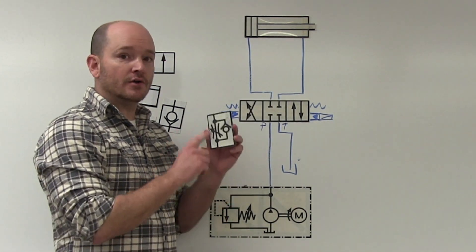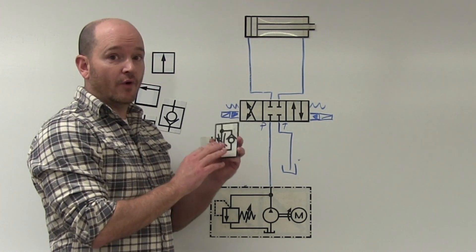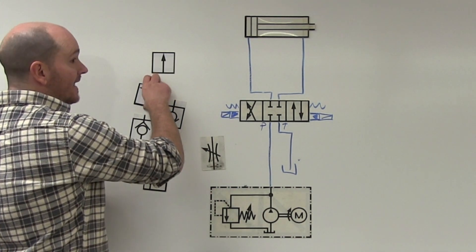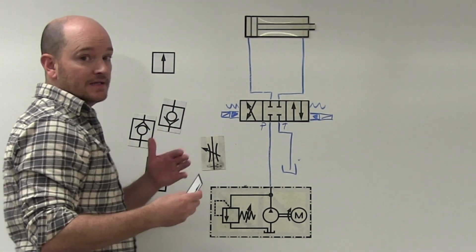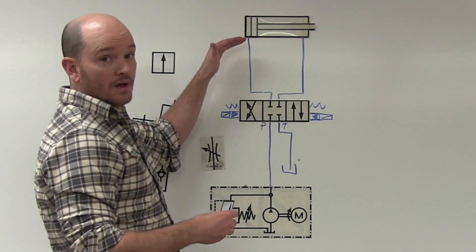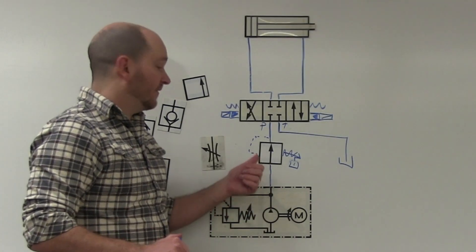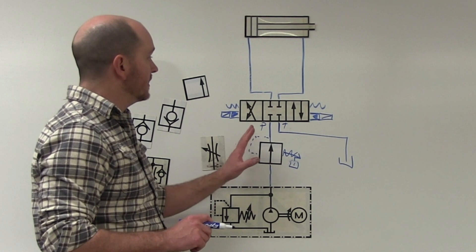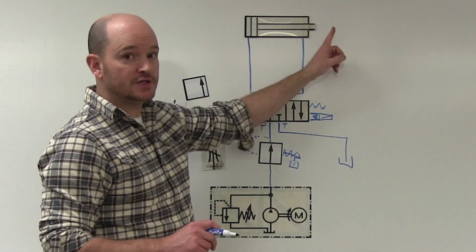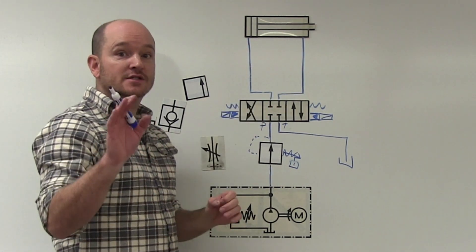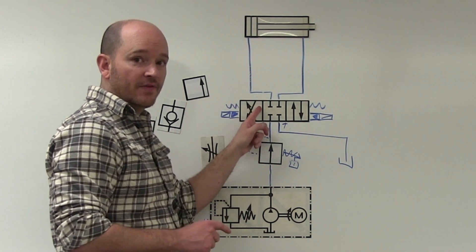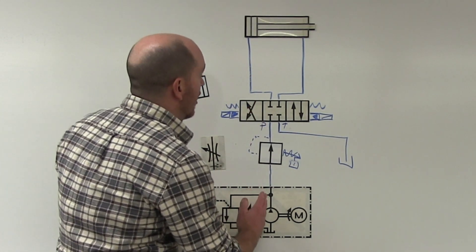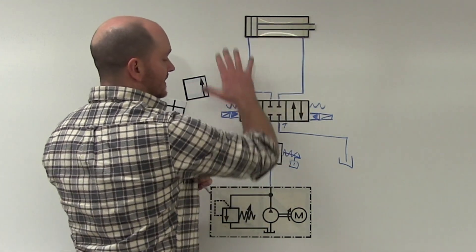And people often stop at that point and think they understand a bypass check valve. But bypass check valves aren't just used for flow control valves. They can be used for any pressure control valve that may need to be placed above the directional control valve. Here's an example of a pressure reducing valve. The pressure reducing valve here is going to reduce pressure on both extension and retraction. And so we would want to put this before the directional control valve, because it will control the pressure for all of the fluid going into this system.